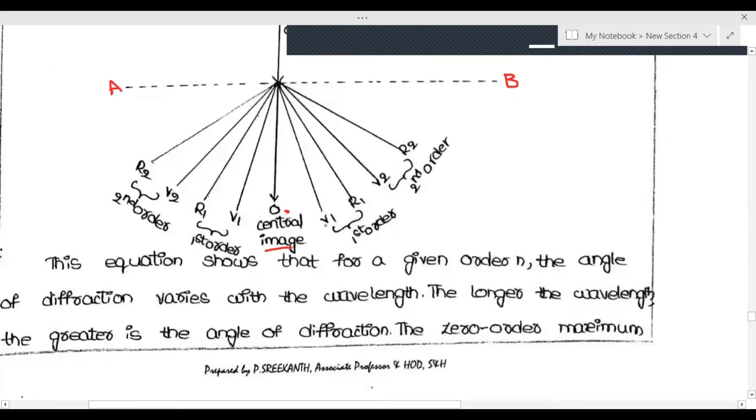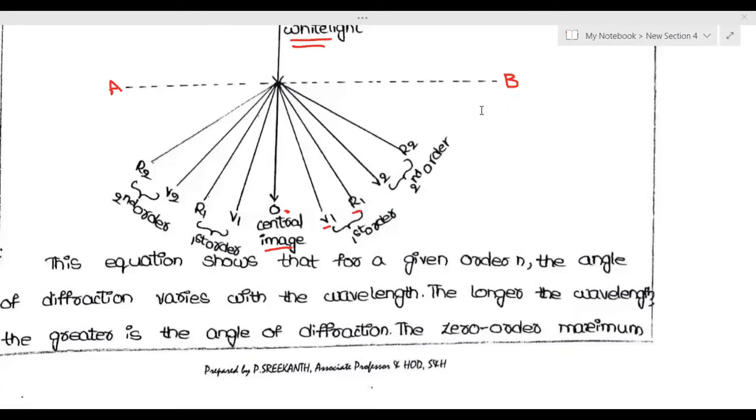Next we have first order and a series of colors. Seven colors split out. This is violet one and red one, this is violet two and red two. Seven colors in each series are formed. Each set of series - first order, second order - can form up to 90 degrees depending upon the grating.